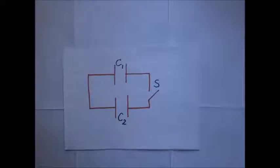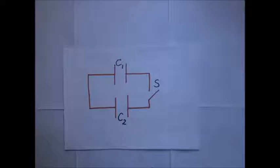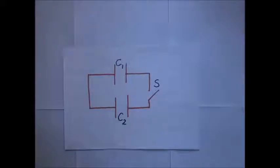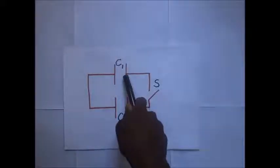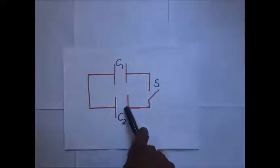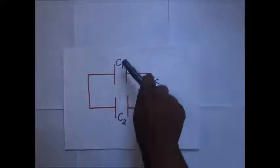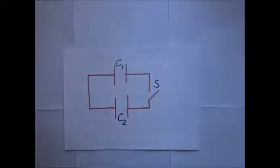They've been connected in parallel. When we connect them, charge flows from the capacitor with higher potential difference to the one with lower potential difference, until the potential difference across C1 and the potential difference across C2 become the same. When that happens, charge stops flowing.